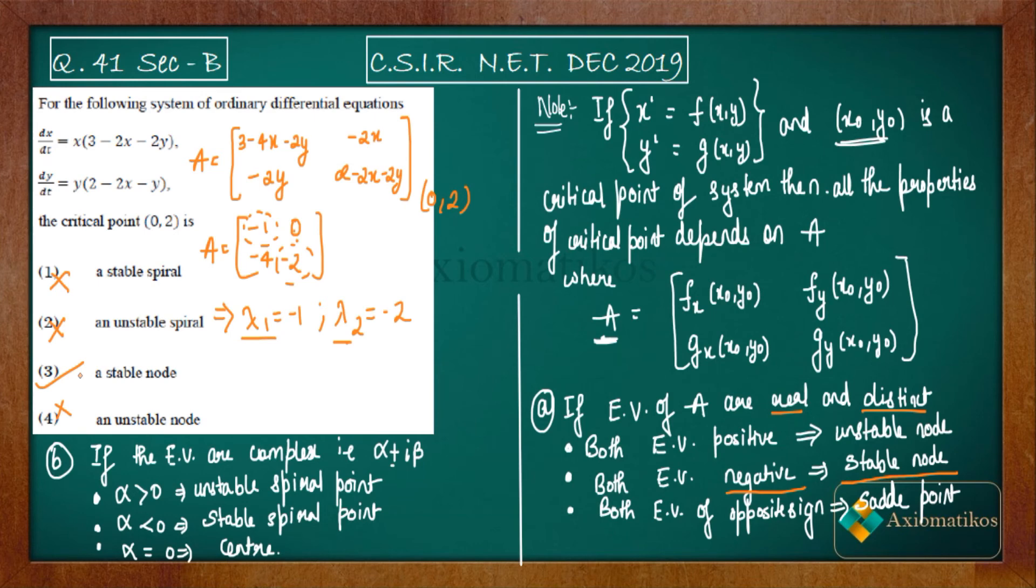The problem is totally dependent upon the concept, and the concept has the most important Jacobian matrix. According to the Jacobian matrix, if eigenvalues of the Jacobian matrix satisfy the properties which we have written, then we can easily determine the properties of the critical points. So whether your critical point is a stable spiral or unstable spiral, all depends upon the eigenvalues of the Jacobian matrix. So this matrix that we have written is your Jacobian matrix.